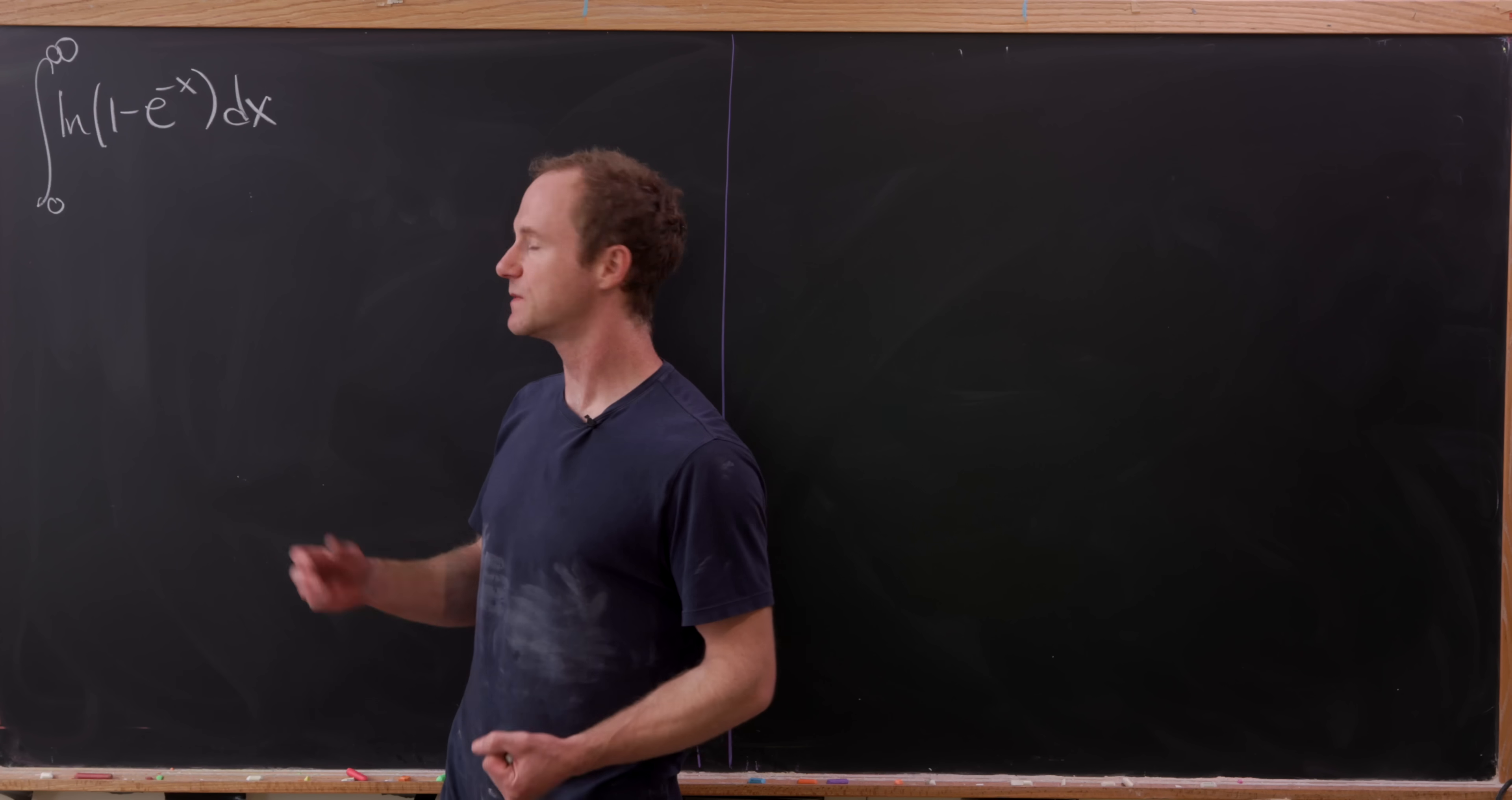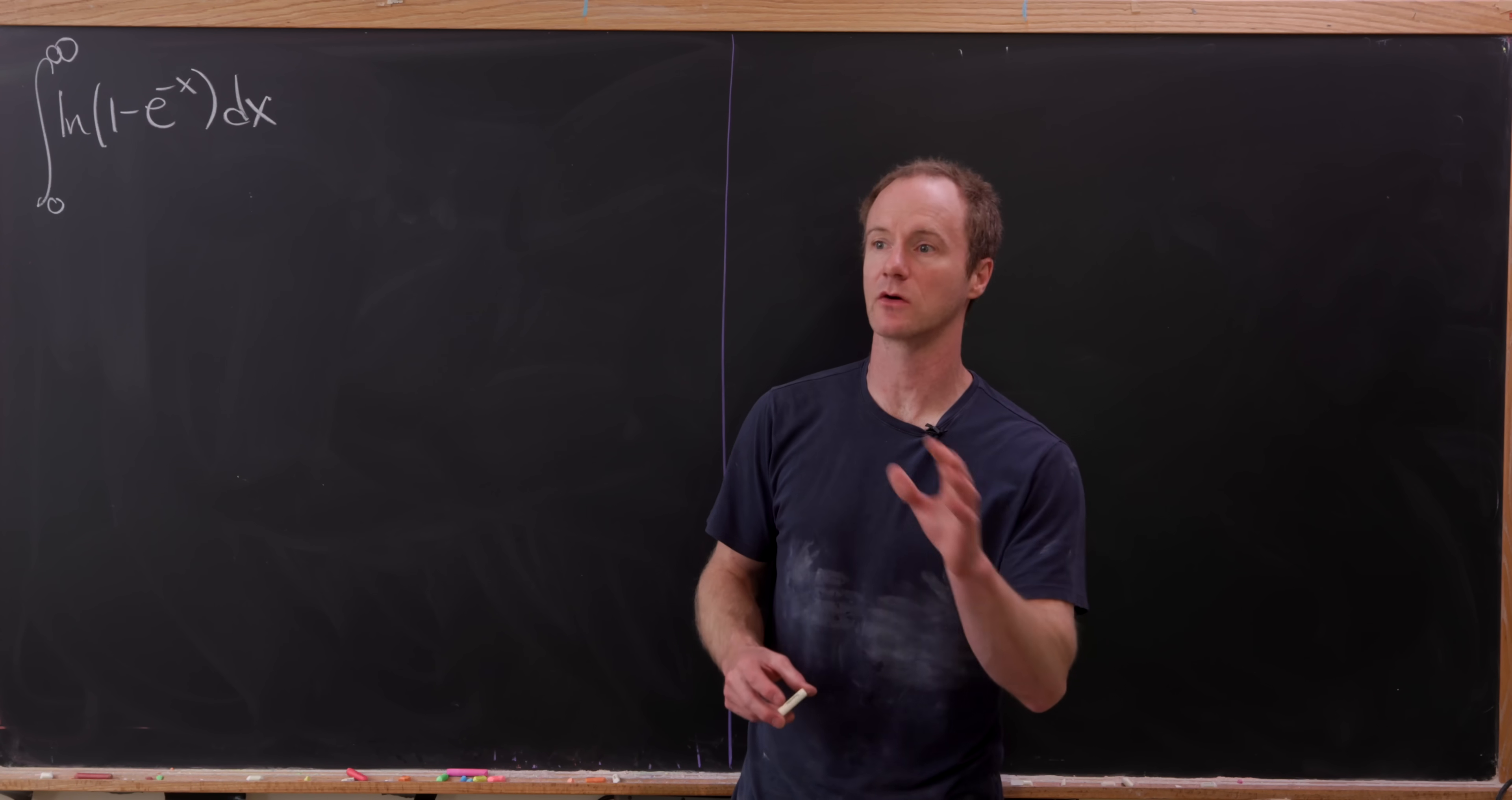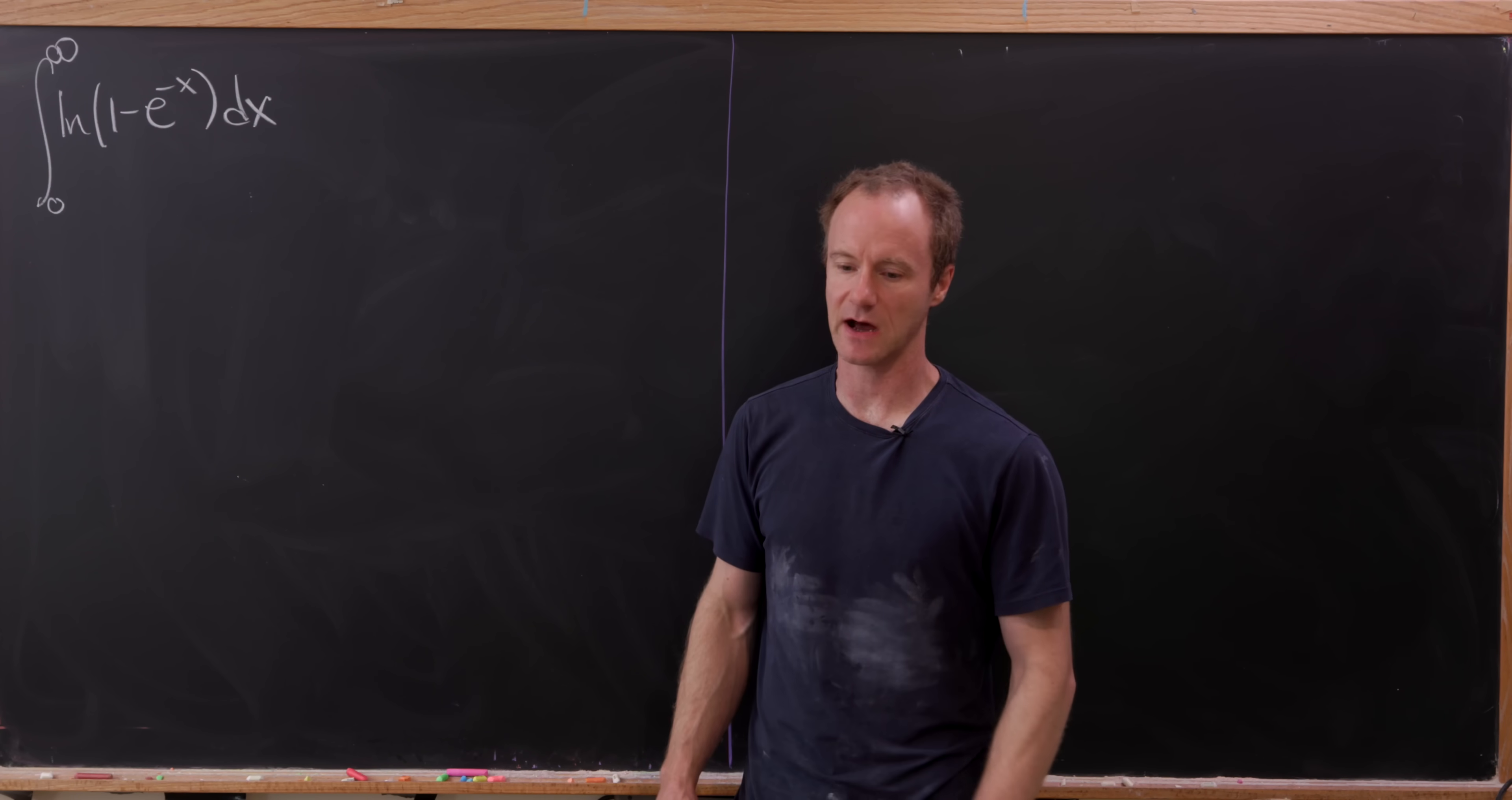To be precise, we have the natural log of 1 minus e to the minus x as the integrand. Observe that if that 1 wasn't there, we could use the fact that the logarithm and exponential function are inverses and get a lot of simplification. But this slight deformation of that nice case is what makes this integral stand out.